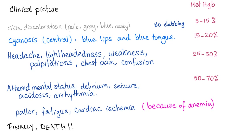What kind of cyanosis? Central — blue lips, blue tongue. Blue extremities? No. Entire body blue? True. Symptoms include headache, lightheadedness, weakness, palpitations, chest pain, confusion, altered mental status, delirium, seizure, acidosis, arrhythmia, symptoms of anemia, and finally death. Symptoms depend on methemoglobin concentration — the higher, the worse.